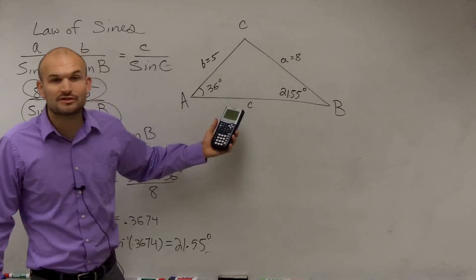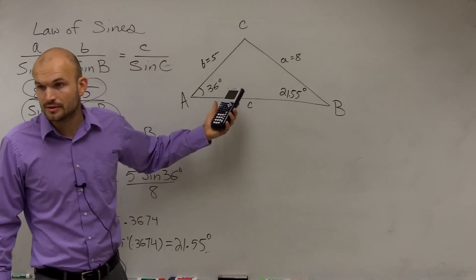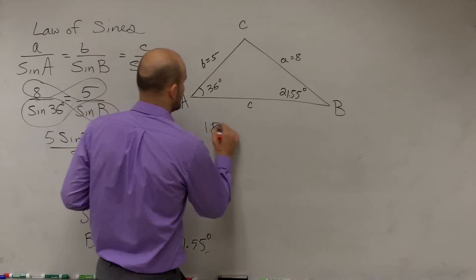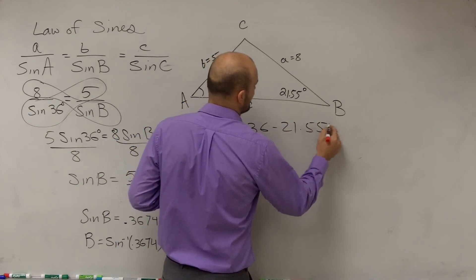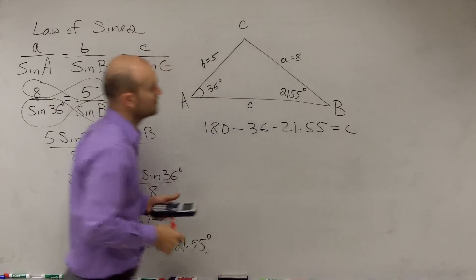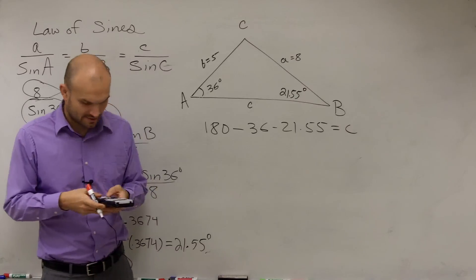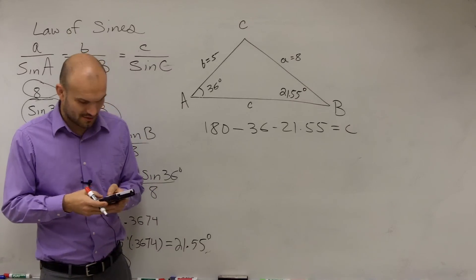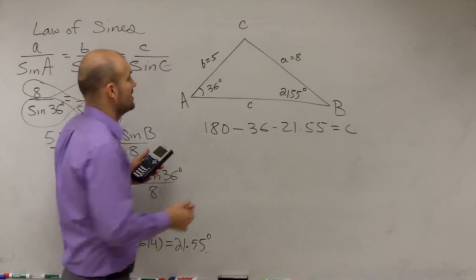We're given two angles of a triangle, though. So once we know two angles of a triangle, can we find the third? Yeah. So we'll just do 180 minus 36 minus 21.55, and that's going to equal our C. If you take 180 minus your other two angles, you're going to get C. So we take 180 minus 36 minus 21.55, we get 122.45.